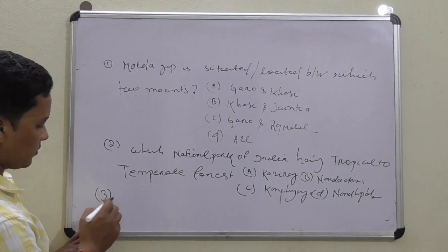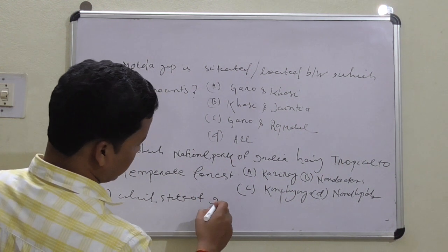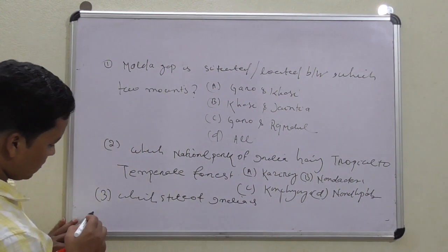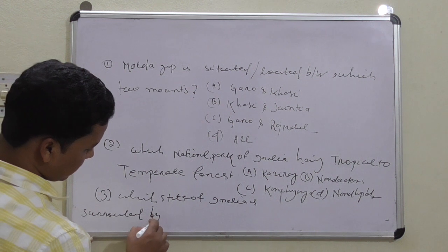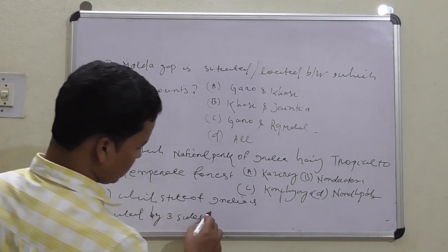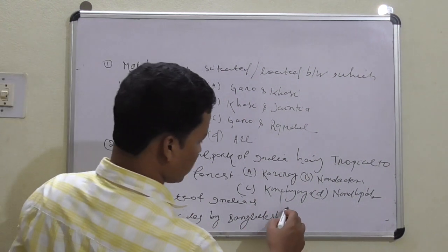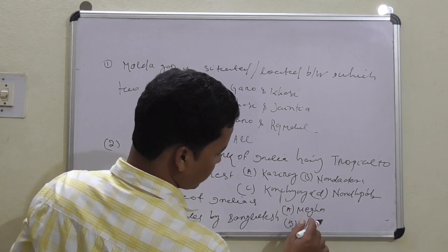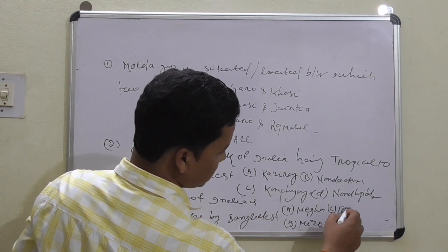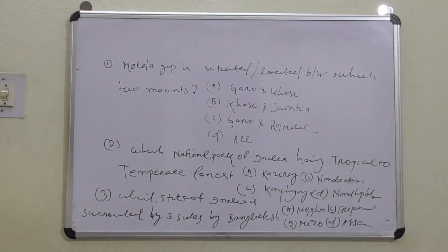Question number three: Which state is surrounded by three sides by Bangladesh? Option A: Meghalaya. Option B: Mizoram. Option C: Tripura. Option D: Assam. These are the three questions.